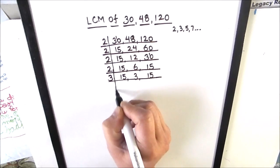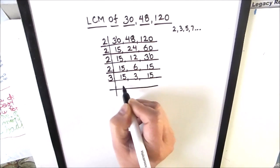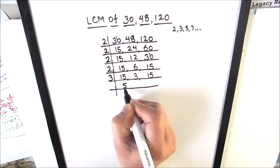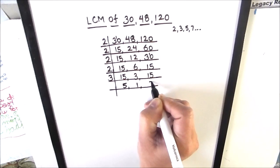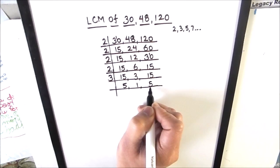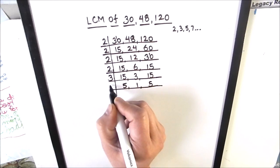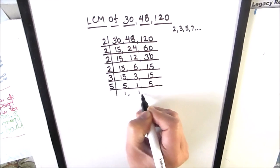So we use 3 to divide the numbers: 3 times 5 is 15, 3 times 1 is 3, and 3 times 5 is 15, giving us 5, 1, and 5. Now 5 is a prime number — it is only divisible by 5. Dividing: 5 times 1 is 5, 5 times 1 is 5, so all numbers are fully divided.